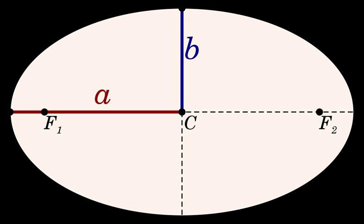The eccentricity of an ellipse is defined as e = √(1 − b²/a²), with r_max equals a(1 + e).